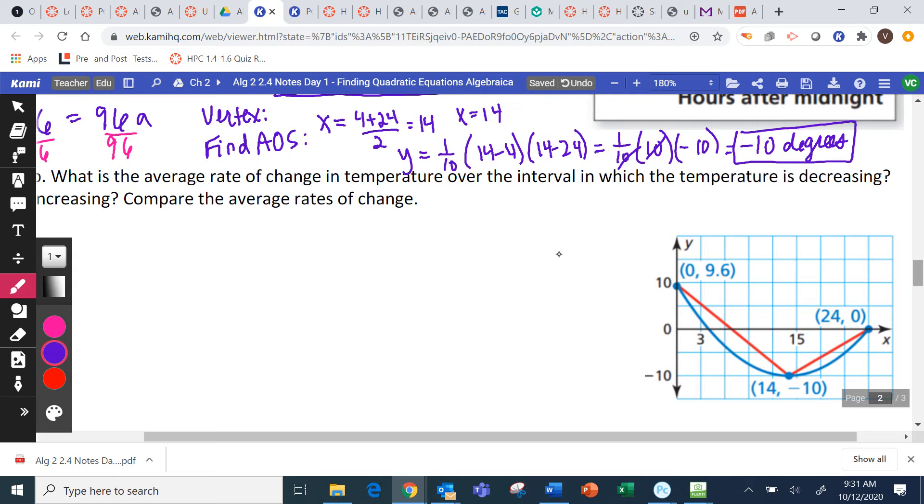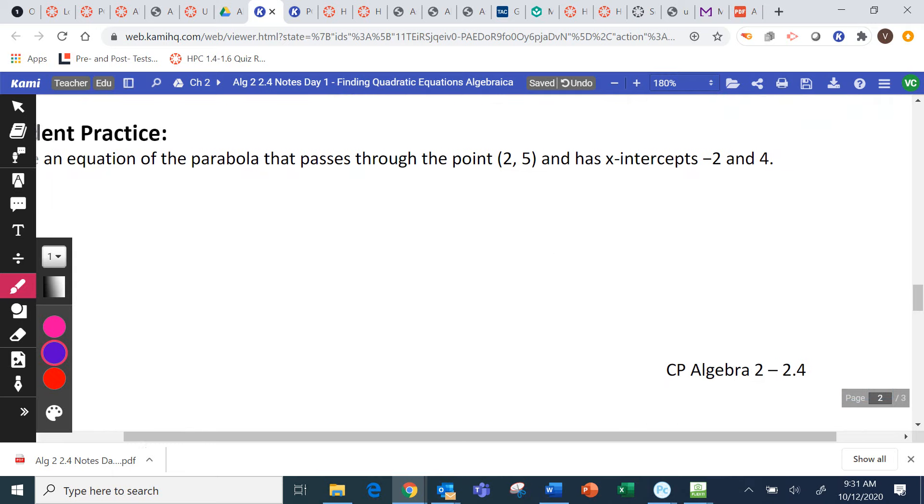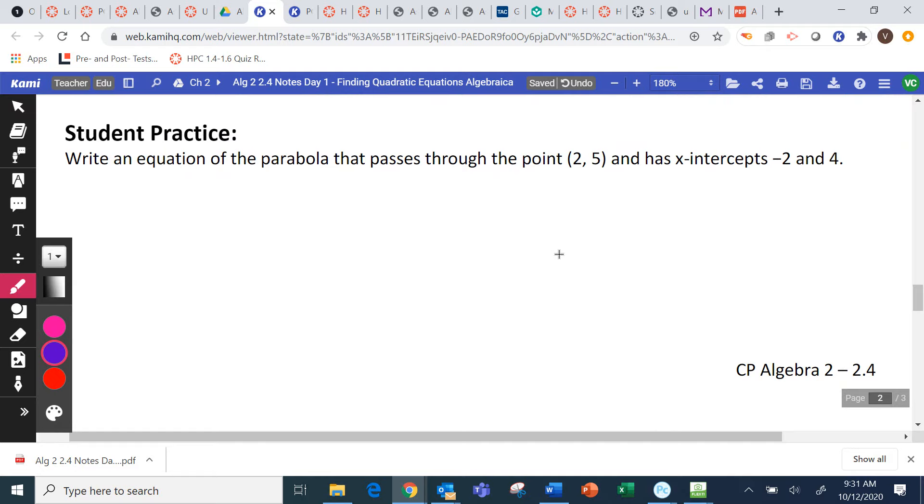And we're going to skip this next question for today. Let's do student practice writing equation of the parabola that passes through 2, 5 and has x-intercepts at negative 2, 4. So, we've got x, y. We've got p, q. So, y equals A times x minus p times x minus q. I'm going to keep writing it until I know it. Then we're going to plug in x, y, p, and q. So, 5 equals A times x is 2 minus p is negative 2. And then 2 minus 4.